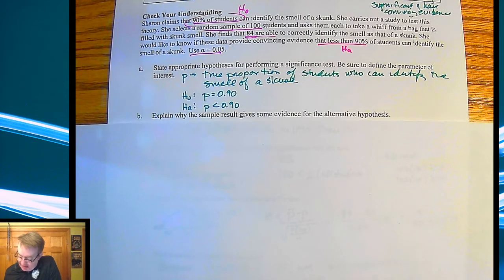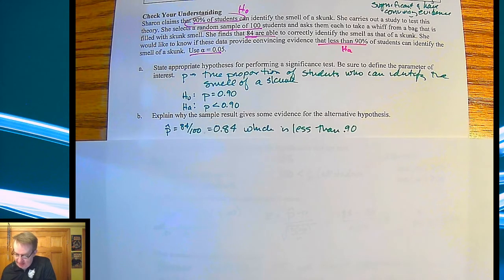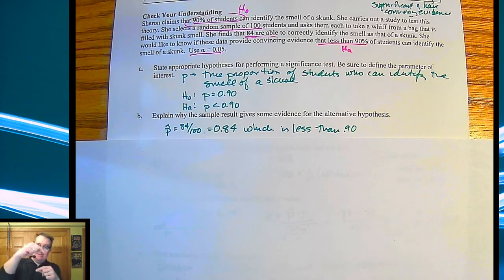Now it says explain why the sample results give some evidence for the alternative hypothesis. Well, our sample is P hat is 84 out of 100, which is 0.84, which at least tells us that we're going down. So it looks like, well, we're at least on the right track. Or we should say at least Sharon's on the right track.